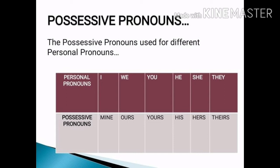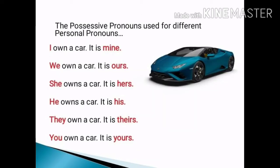Now let's learn the equivalent possessive pronouns for different personal pronouns. For 'I', use the possessive pronoun 'mine'. For 'we', use 'ours'. For 'you', use 'yours'. For 'he', use 'his'. For 'she', use 'hers'. For 'they', use 'theirs'. For example: if I own a car, I say it is mine. If we own a car, it is ours. If she owns a car, it is hers. If he owns a car, it is his.